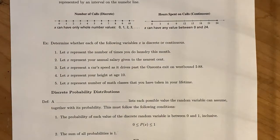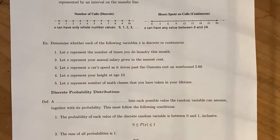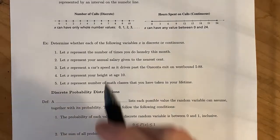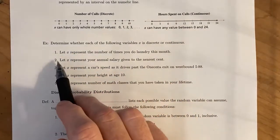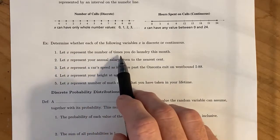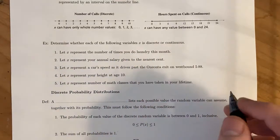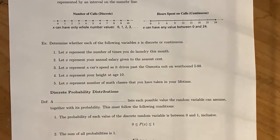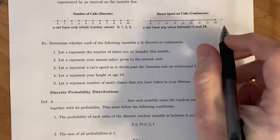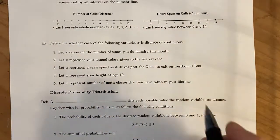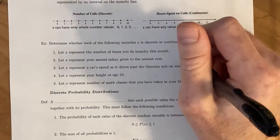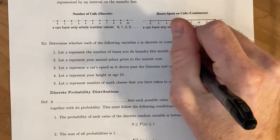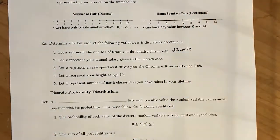And so we'll practice determining the difference between a discrete and a continuous random variable. So for the first one, x is going to represent the number of times you do laundry this month. Well, you're either going to do laundry once, twice, three times, four times, however many times, but it's a whole number. So you can sit there and actually count up how many times you've done it, which leads us to say that this is a discrete random variable.